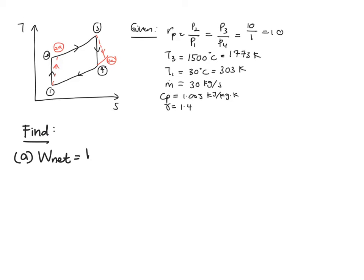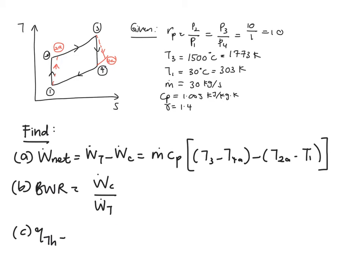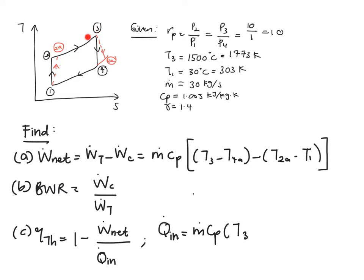Let us find out what we are trying to solve for. Part A is your net work — the definition is your turbine work minus your compressor work. If you expand these two terms we will have M-dot times Cp times (T3 − T4a) minus (T2a − T1). Next you are going to find the back work ratio, which is compressor work divided by turbine work. And finally we will look at the thermal efficiency, which is W-dot net over Q-dot in, where Q-dot in equals M-dot Cp(T3 − T2a).